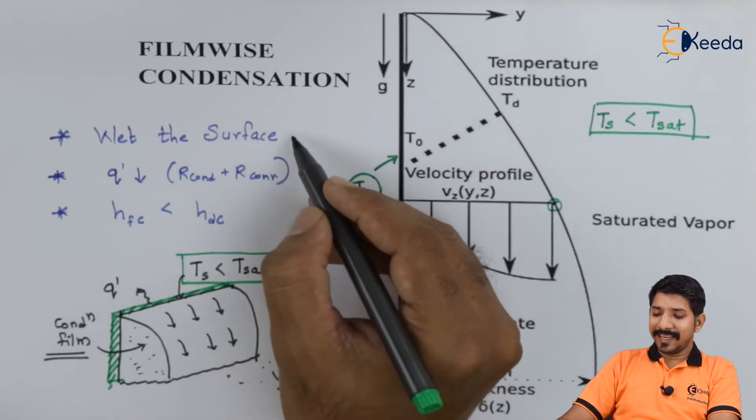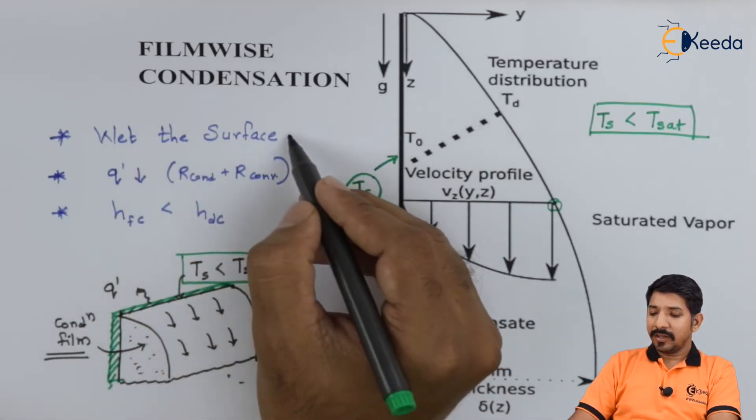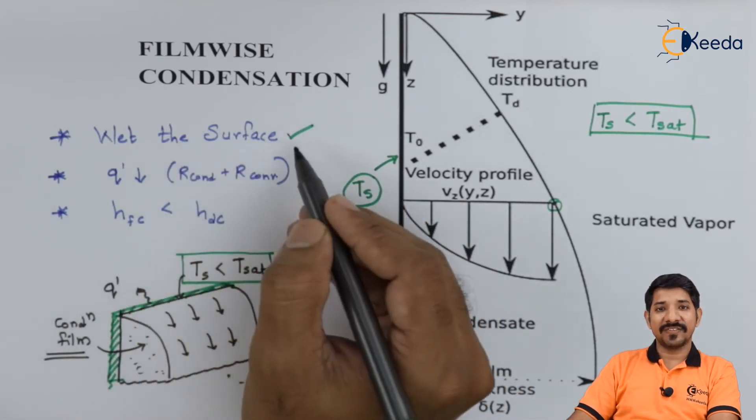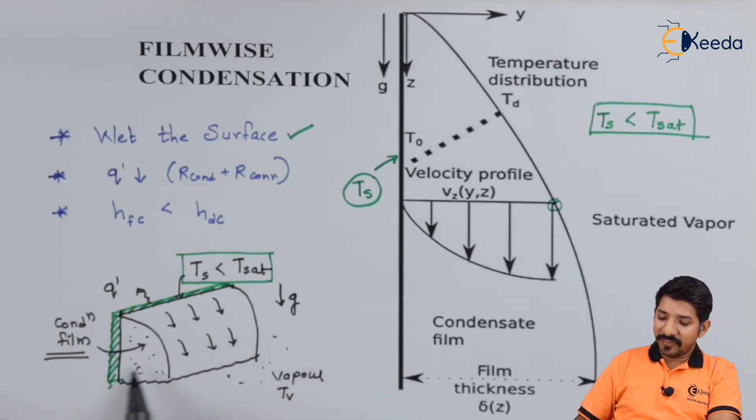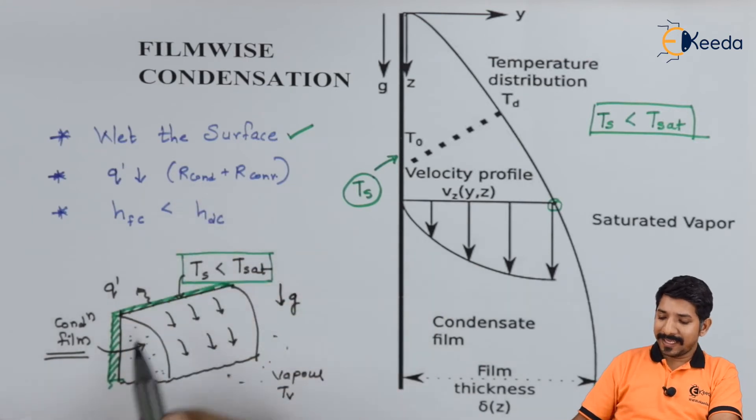What we need to understand is that in filmwise condensation, it wets the entire surface. The surface is entirely covered by the fluid. What is happening because of this? The heat transfer will introduce two resistances: one is by conduction.